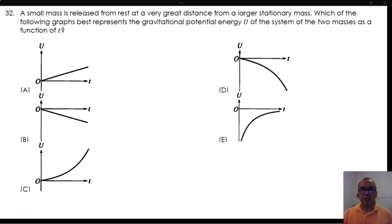Problem 32. A small mass is released from rest at a very great distance from a larger stationary mass. Which of the following graphs best represents the gravitational potential energy of the system of the two masses as a function of t?